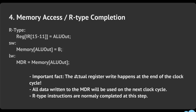Step four is called memory access or R-type completion. For R-type, you've already computed A plus B and stored it in ALU out — now what you need to do is take that result and write it into the destination register, which is bits 15 to 11, referred to as RD.